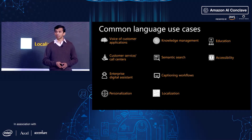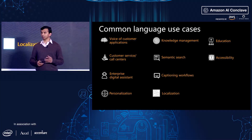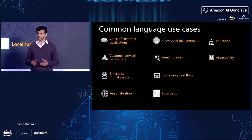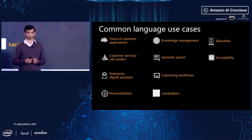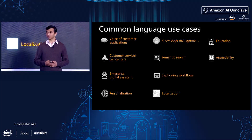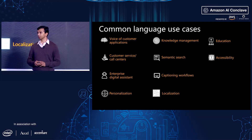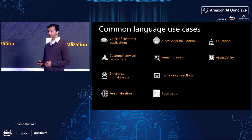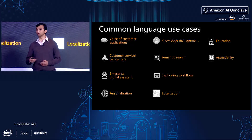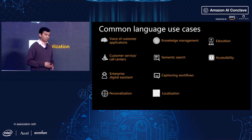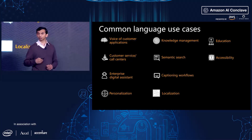Knowledge management and semantic search sort of go together. Using tools like Comprehend Classification, you're able to classify your documents and manage all the knowledge more efficiently. For semantic search, if you're using Elasticsearch to store all your text, you can boost your search by extracting key phrases and building an index based on those key phrases.